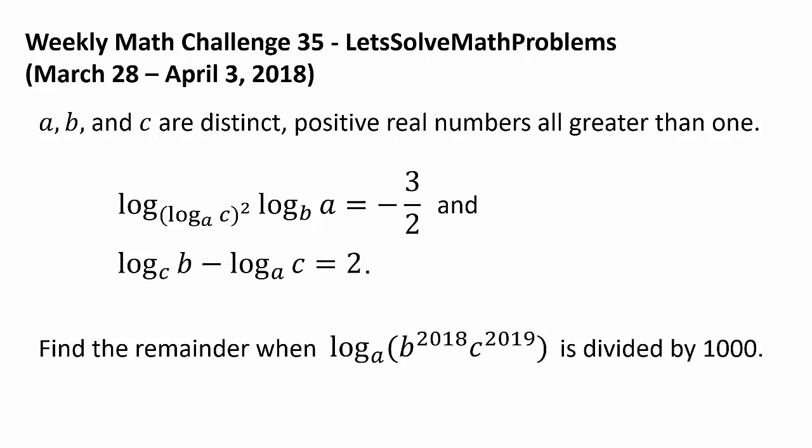Log base (log base a of c) squared of log base b of a equals negative three-halves, and log base c of b minus log base a of c equals 2. Find the remainder when log base a of (b to the 2018th power times c to the 2019th power) is divided by 1000.